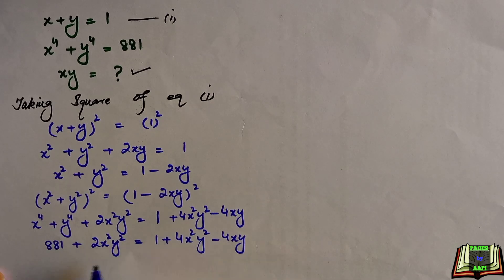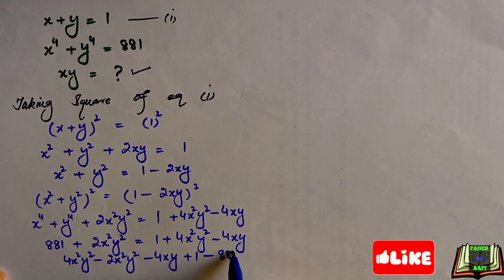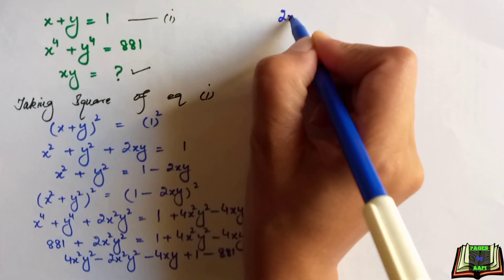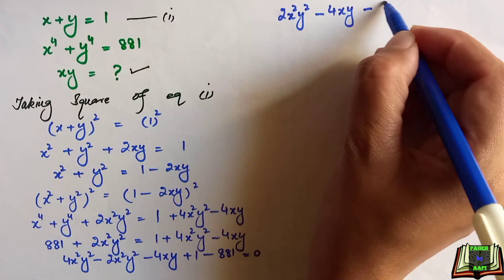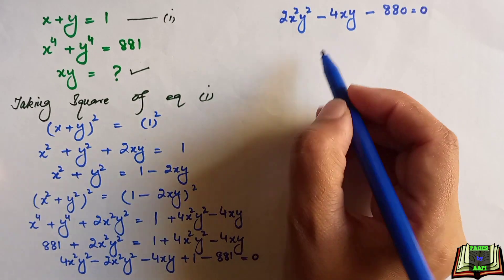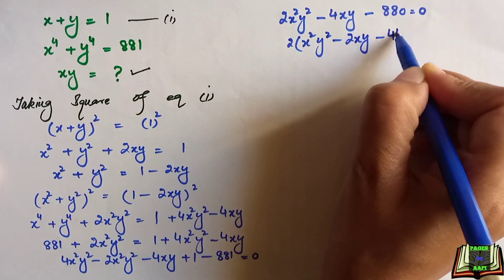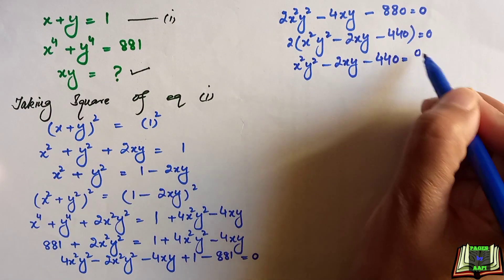Now we rearrange the terms. 4x squared y squared minus 2x squared y squared gives 2x squared y squared, minus 4xy, and 881 minus 1 gives 880 on the other side. Taking 2 as common, we are left with x squared y squared minus 2xy minus 440 equals 0. Dividing both sides by 2 leaves the equation unchanged at zero.